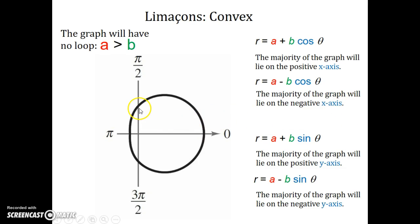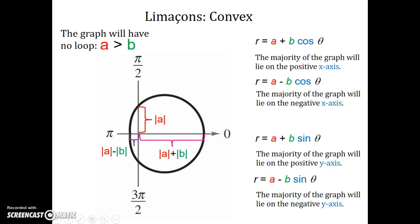Everything about the other limacons we learned is still true for convex limacons. The distance from the pole to the perpendicular axis is still A, and from the pole to the end of the limacon is still A plus B. The only new distance added is from where the limacon intersects the back part of the major axis to the pole, which is A minus B. Recognizing the relationship between A and B and the plus or minus sine or cosine is key to graphing these by hand.